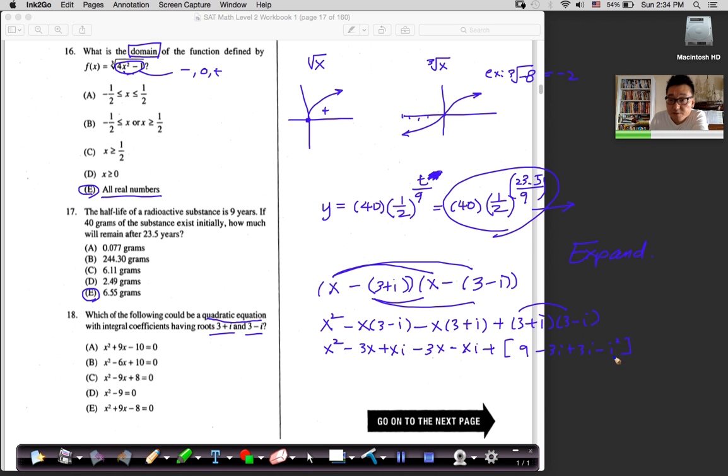Right? What does that give me? i squared is negative 1. So negative 1 times negative is positive. 9 plus 1 is 10. So that back portion is 10. And what do I see? Usually, these i terms go bye-bye. Right? So I'm left with x squared minus 6x plus 10 is what I get.